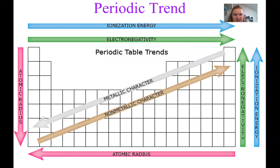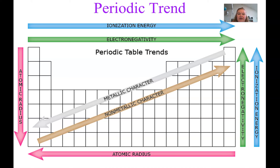The last slide summarizes all the trends together: ionization energy, atomic radius, and metallic character. The green arrows show electronegativity — we don't need that for this chapter, but we will for the next. Metallic character is balanced out with non-metallic character as well. And that is it — thank you.